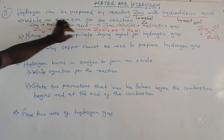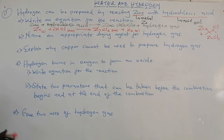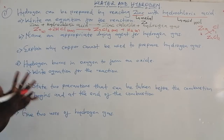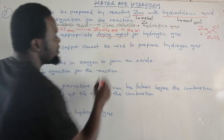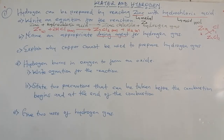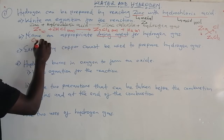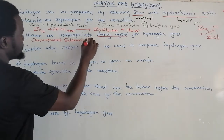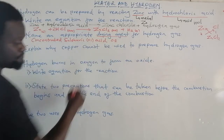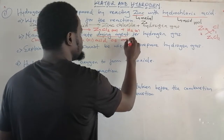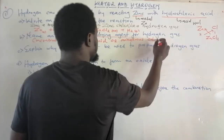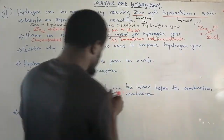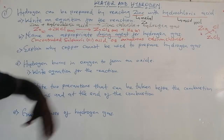Next question: name an appropriate drying agent for hydrogen gas. Any gas like hydrogen, when it is bubbled out, might contain some water molecules. To dry it, we need a drying agent. In the lab, we normally use specific drying agents. In this case, we will require concentrated sulfuric acid, or we can also use anhydrous calcium chloride.